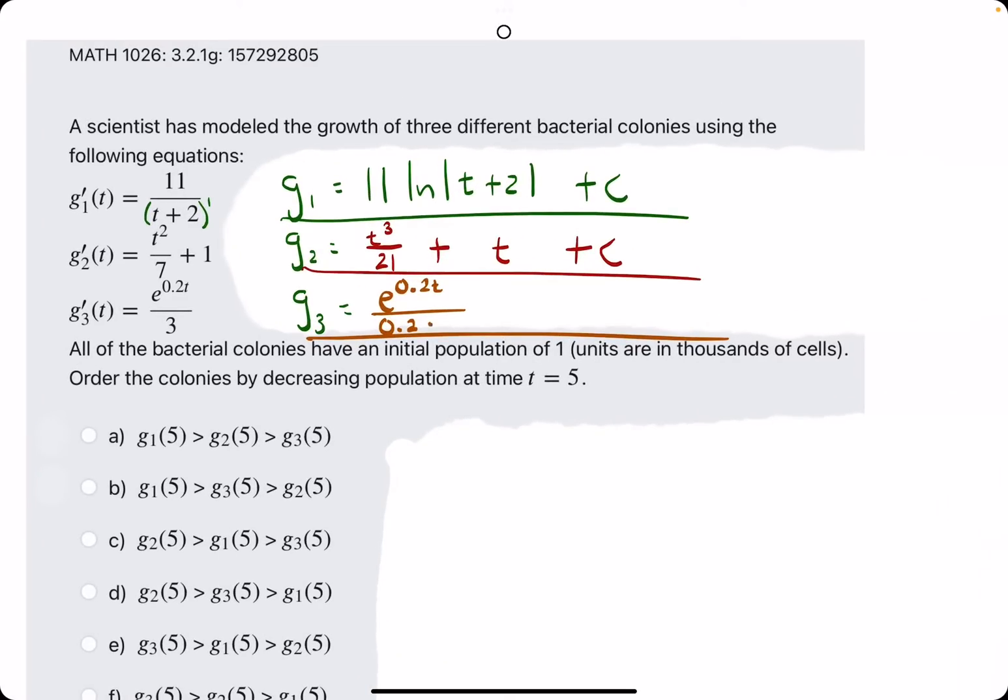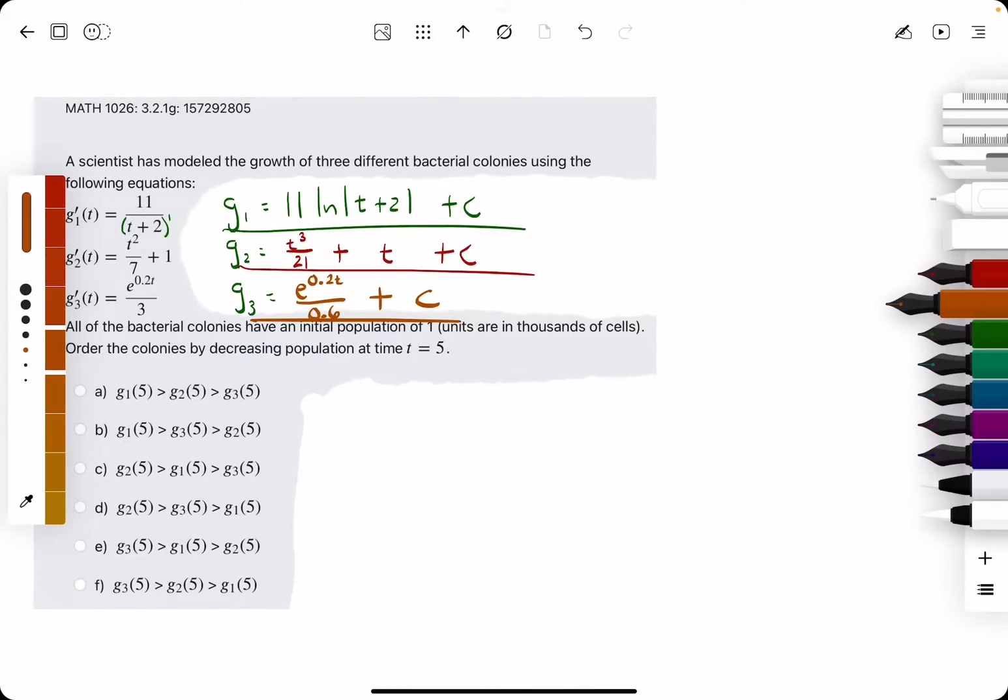We still also have the 3 on the bottom, so 0.2 times 3 is 0.6, and then plus c. So we have our three anti-derivatives.